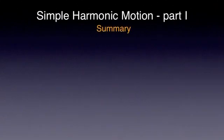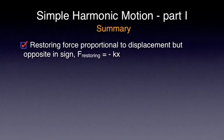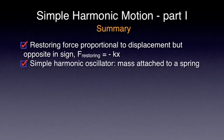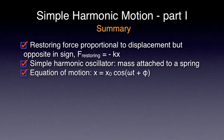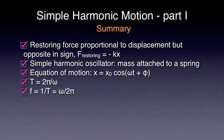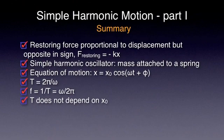Let's now sum up the key points. Simple harmonic motion is a type of periodic motion executed by an object subject to a restoring force proportional to the displacement from equilibrium but opposite in sign. A simple harmonic oscillator can be constructed using a spring of spring constant k and a small object of mass m. The equation of motion is x equals x₀ cos(ω·t + φ), where x₀ is the amplitude, omega is angular frequency, and phi is the phase constant. The period is T equals 2π over omega, and T does not depend on the amplitude x₀.